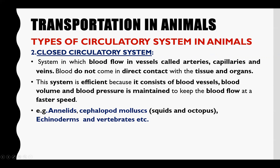Examples of organisms with a closed circulatory system include annelids, the class cephalopoda within mollusks such as squids and octopuses, echinoderms, and vertebrates. The vertebrates include fish, amphibians, reptiles, birds, and mammals.